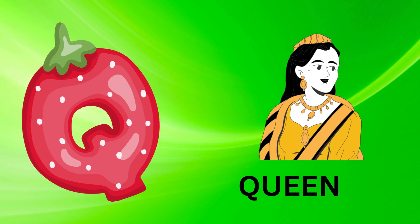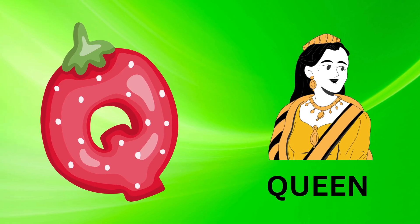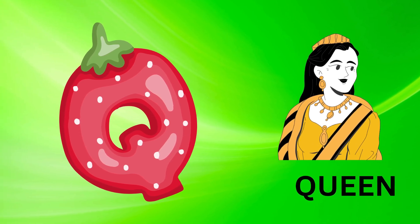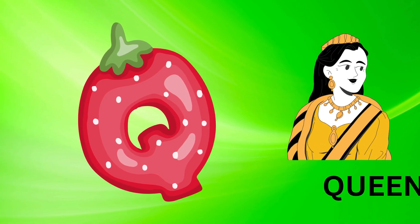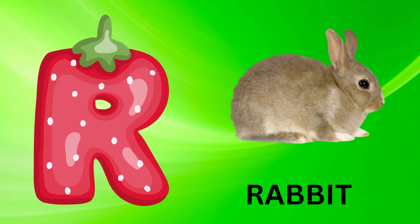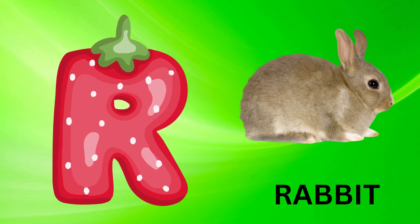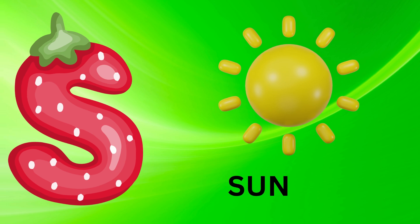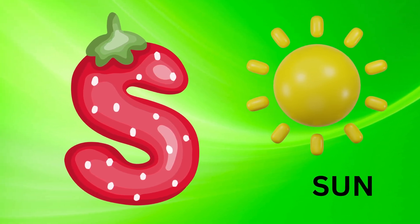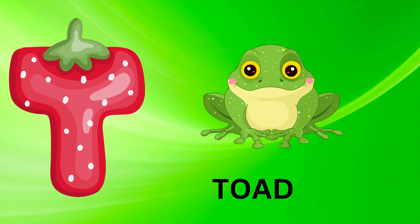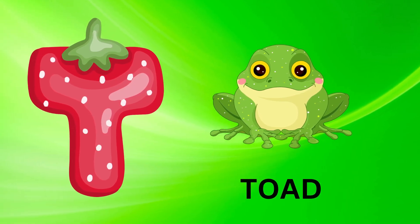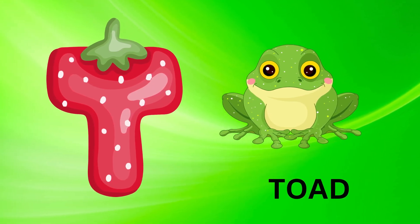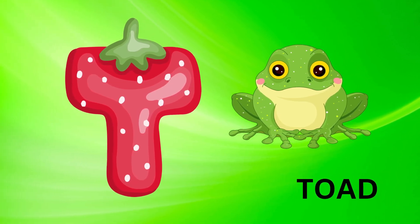Q is for queen, k-k-queen. R is for rabbit, r-r-rabbit. S is for sun, s-s-sun. T is for toad, t-t-toad.